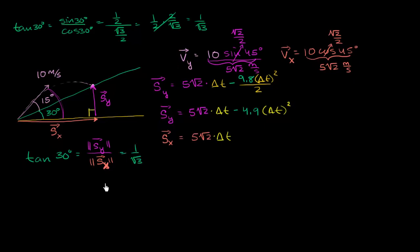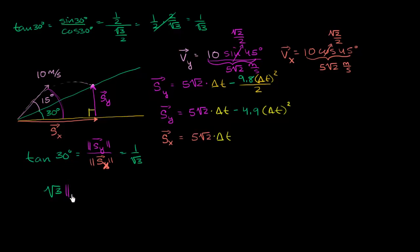This gives us a useful relationship between our horizontal and vertical components. Cross-multiplying — multiplying both sides by √3 and the horizontal component — we get: √3 × |vertical displacement| = |horizontal displacement|.